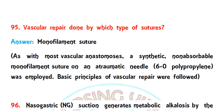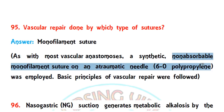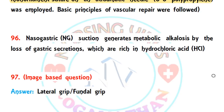Question 95: vascular repair is done with which type of sutures? The correct answer is monofilament suture. As with most vascular anastomoses, a synthetic non-absorbable monofilament suture on an atraumatic needle is employed. The basic principle of vascular repair is followed with monofilament sutures only.